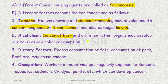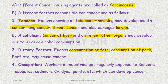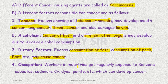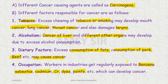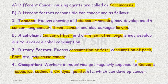Alcoholism causes liver cancer (hepatoma) and affects different other organs. Dietary factors: excess consumption of fats, pork, or beef may cause cancer. Occupational exposure to benzene, asbestos, cadmium, chromium, dyes, and paints in industries leads to cancer development. Coal and oil products, nicotine, caffeine, and polycyclic hydrocarbons are also causes.